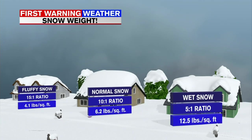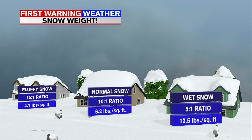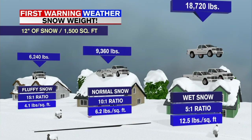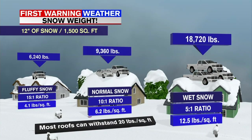The ratios stand for snow versus water equivalent. So, for every inch of water you have, you get 5 inches of wet snow, 10 inches of normal snow, and 15 inches of light, fluffy snow, dependent on the temperature. This is why heavy, wet snow can be particularly problematic and damaging, causing downed tree limbs and power outages.